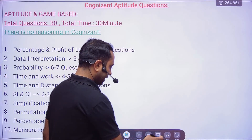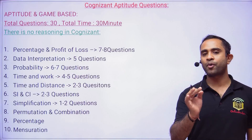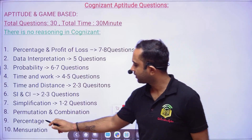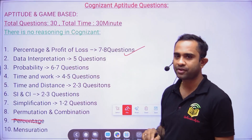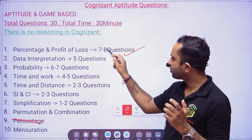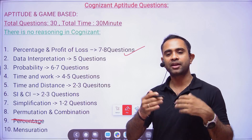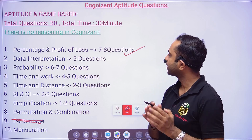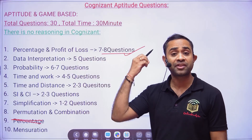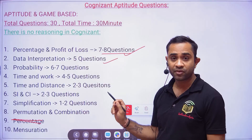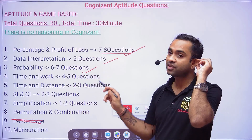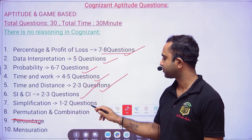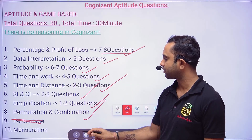Now I will tell you the 10 very important topics for your Cognizant exam. Number one: Percentage and Profit & Loss — 7 to 8 questions. Data Interpretation — 4 to 5 questions. Probability — 6 to 7 questions. Time and Work — 4 to 5 questions. Time and Distance — 2 to 3 questions. Simple Interest and Compound Interest — 2 to 3 questions. Simplification — 1 to 2 questions. Permutation and Combination. Mensuration. These are the very important topics; other topics are not that important.